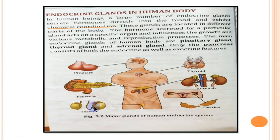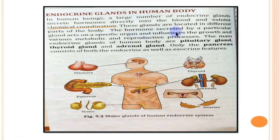As we know, the hormones are secreted from the endocrine glands and they travel through the blood and exhibit chemical coordination in the body. Particularly, the hormones secreted by specific glands act on a specific organ, that is known as the target organ.